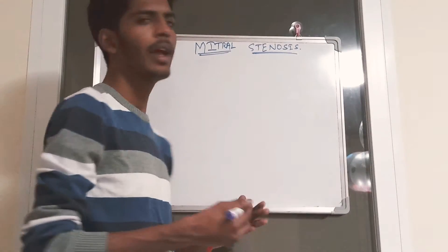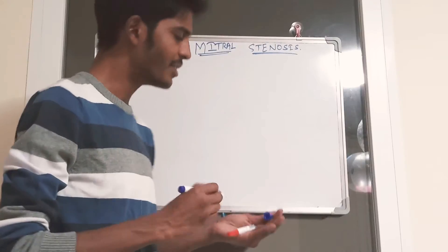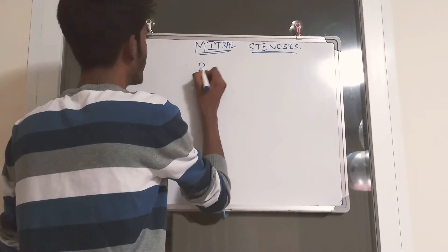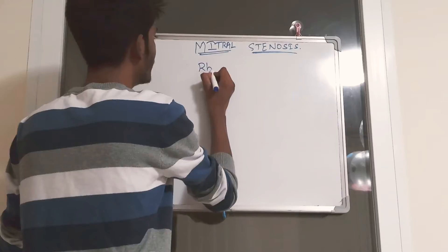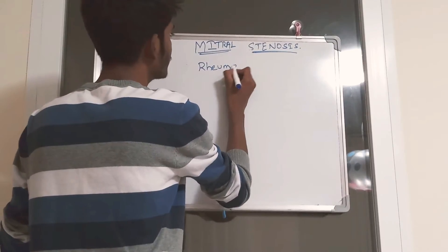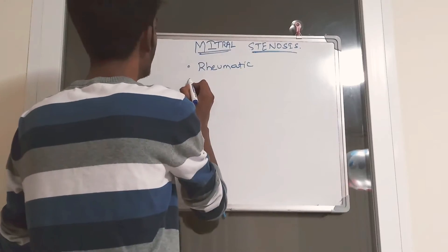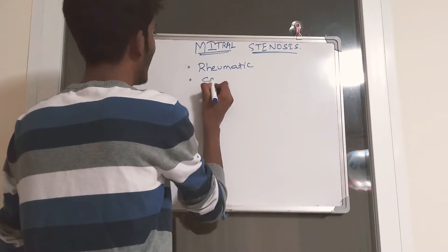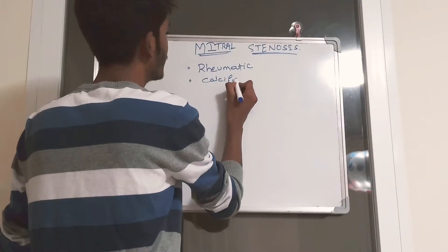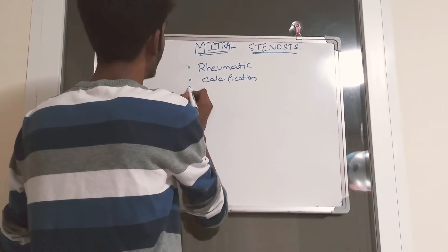I am going to discuss etiology along with pathogenesis. Generally, most commonly, mitral stenosis is due to rheumatic disease. In elderly people it is due to calcification of the valve, and it can also be congenital.